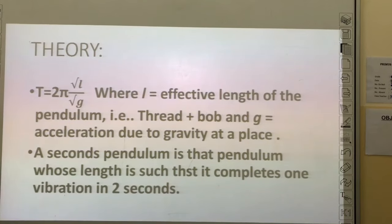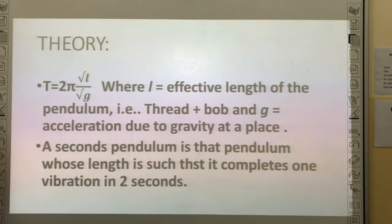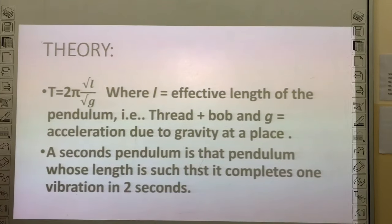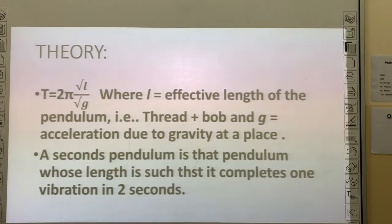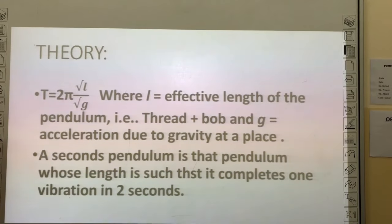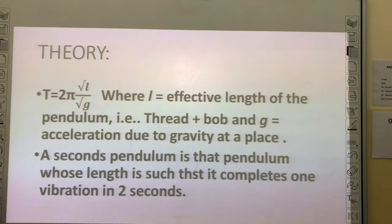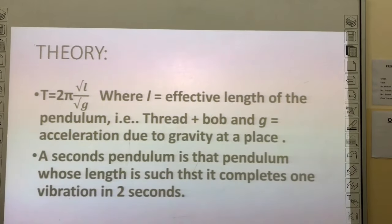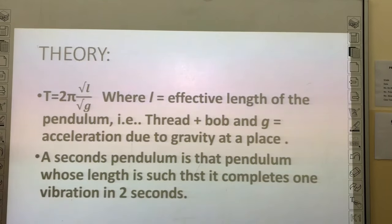To calculate the time period, we use the formula T = 2π√(L/G), where L is the effective length of the pendulum — that is the thread plus the bob — and G is the acceleration due to gravity at a place. A second pendulum is one whose length is such that it completes one oscillation in 2 seconds.